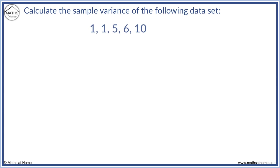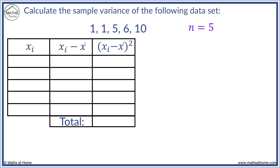Here is another example. Calculate the variance of the following numbers. There are 5 numbers, so n equals 5. We create the table as before. We place the data set as each xi.